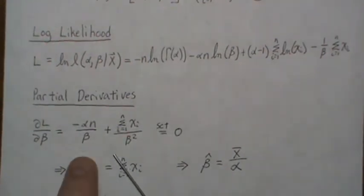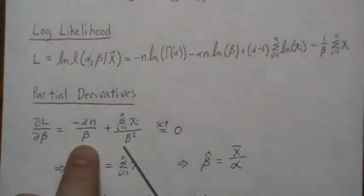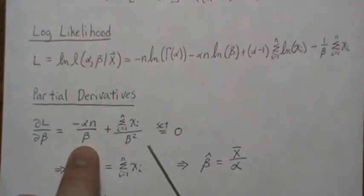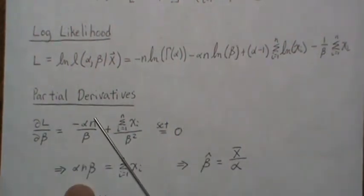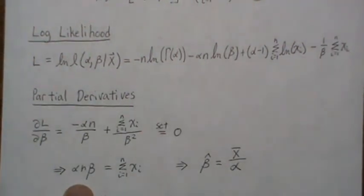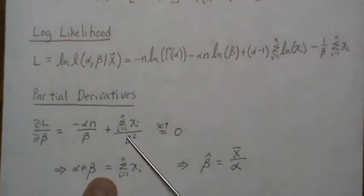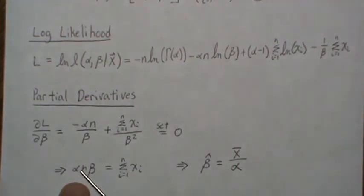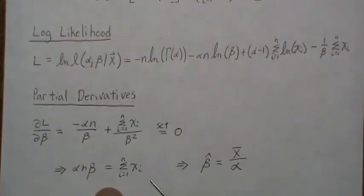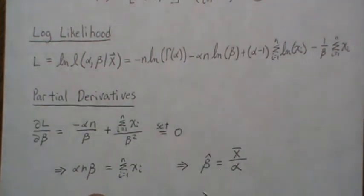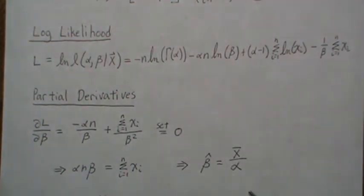We set it equal to 0 and then solve for beta. We multiply by beta squared everywhere, they cancel, and you're left with the beta. We take this to the other side, that negative becomes positive, and then you just get the sum of the xi. So to solve for beta, you divide by n, you divide by alpha, and you get this. So beta, the estimate for beta, is x bar over alpha.